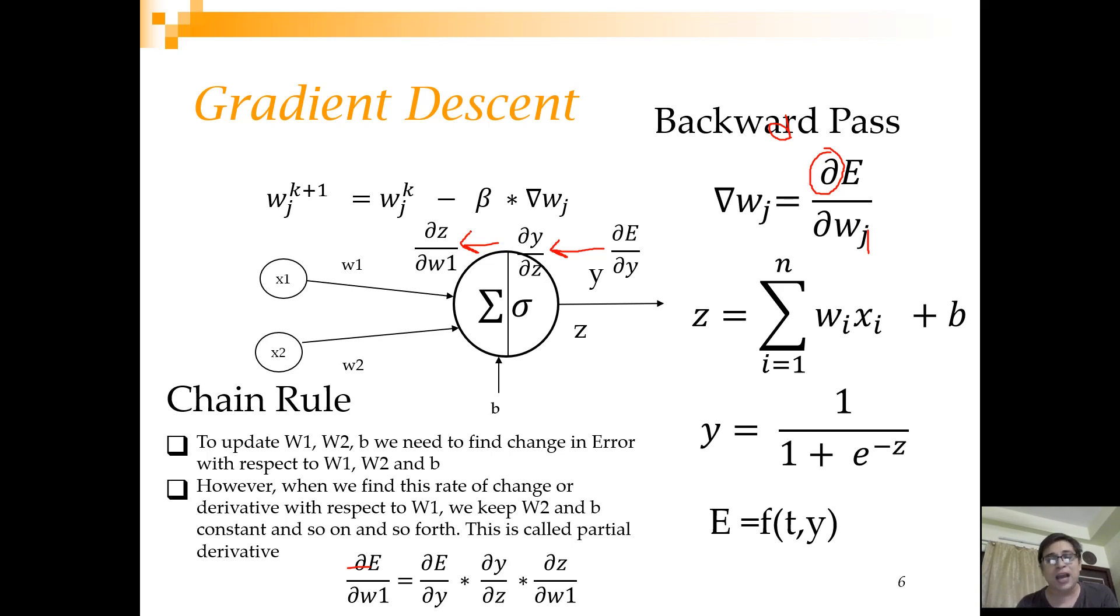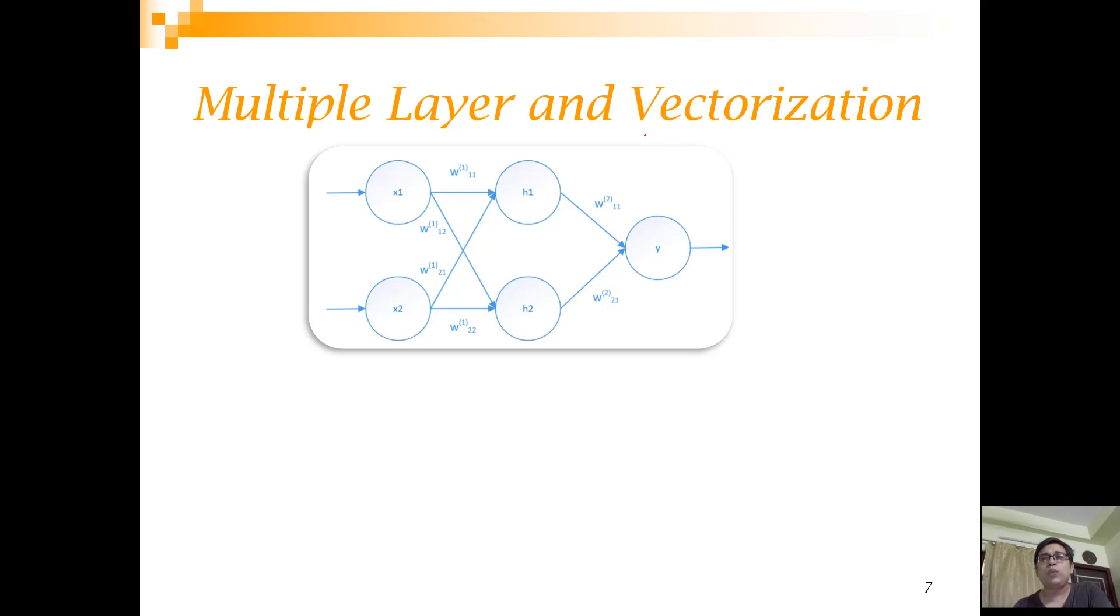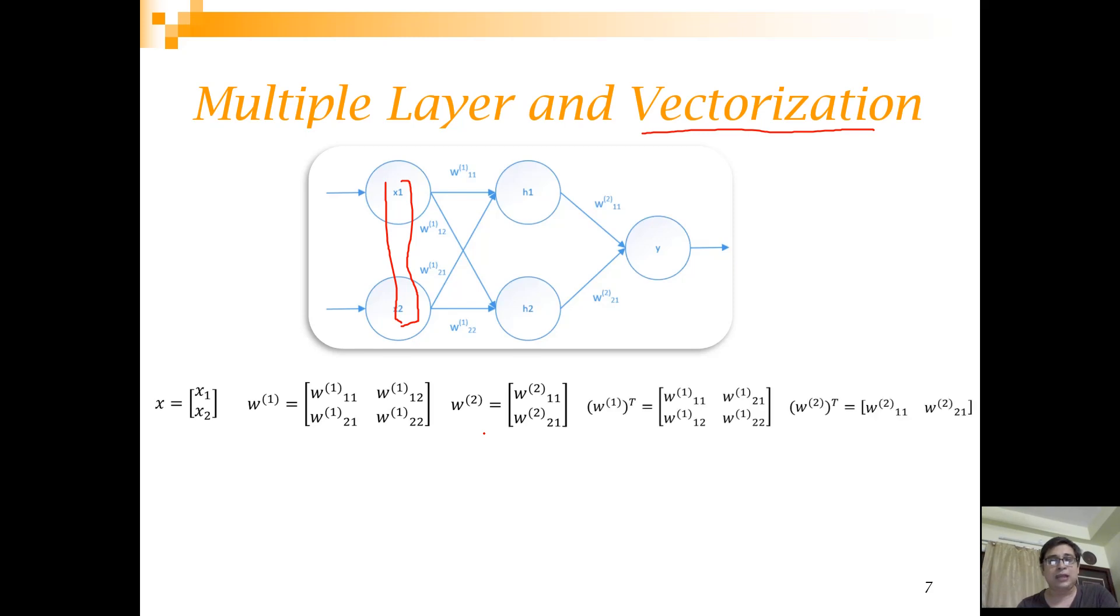This can be very trivially extended to multiple layers. But before that, let us quickly revise the concept of vectorization. What we do is instead of considering x1, x2 separately, we think that this is a vector x which has two elements x1 and x2. This layer of weights and this layer of weights can be represented by matrices. It turns out that if I just transpose these matrices, so swap the rows and columns, and do a simple matrix operation, multiply x with W transpose, then I can find out the aggregated input. I can find out z1 and z2. We don't need to calculate z1, z2 individually. We can find that by using this matrix operation.